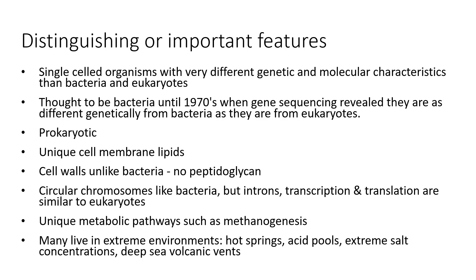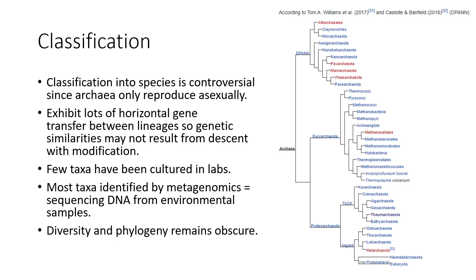Many archaea have unique metabolic pathways — one example is methanogenesis, where they produce methane gas as a byproduct of their metabolism. A lot of them live in very extreme environments: hot springs, acid pools, salt lakes, and volcanic vents — areas where no other living things survive well. Like bacteria, their classification is very controversial. They only reproduce asexually, and they exhibit lots of horizontal gene transfer, so genetic similarities don't necessarily result from descent with modification. Very few taxa have been cultured in labs — even fewer than for regular bacteria — and most have been identified by metagenomics. More are being discovered all the time.